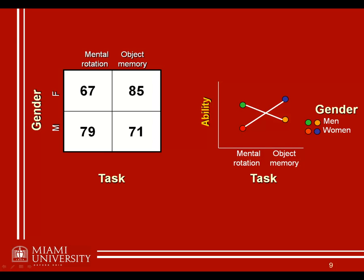Let's go back to the original 2 by 2 design to identify more specifically the different types of effects we can investigate with any factorial design. If we take the values from the graph and place them in the table, these are the averages for individuals in each group. Females on the mental rotation task averaged 67% accuracy; females on the object memory task averaged 85%. Males averaged 79% and 71% accuracy across the two tasks.